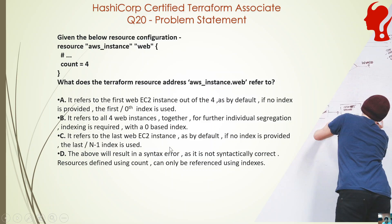So there is a difference between A and C. Option A says the first EC2 instance of the 4, and C says the last. Option D says an error will result — a syntax error — as it is not syntactically correct. The resources defined are using count and can only be referenced using indexes, so D is saying this is an error and you need to do something like aws_instance.web[0]. Let us go to the answer.